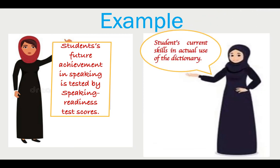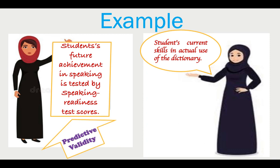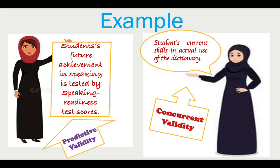In another example, we may need to find out a student's current skills in actual use of the dictionary while using a test of dictionary skills. Both of these come under criterion validity. The first example — assessing future achievement in speaking — is predictive validity, and the second — assessing current skills — is concurrent validity. Both are known as criterion validity.